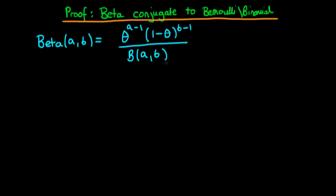The important thing to notice about this denominator is that it is merely a constant which ensures that the beta distribution, when you integrate from theta equals zero to theta equals one, actually integrates to one so that it is in fact a valid probability distribution. So what we could actually do is rewrite this as just being equal to some constant times theta to the power a minus one times one minus theta to the power b minus one.